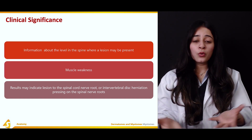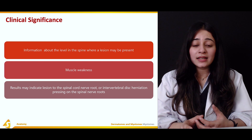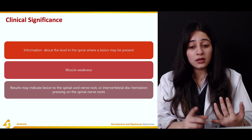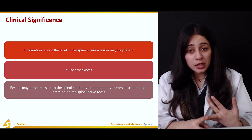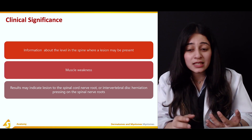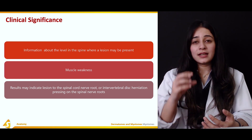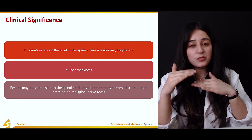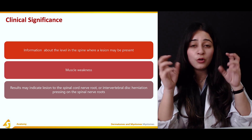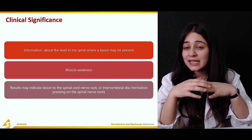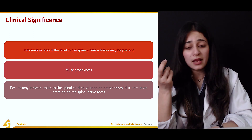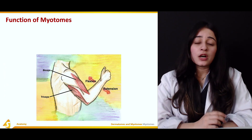When we ask the patient to perform these activities and the patient is unable to do so, that means a lesion is present or the muscle is weak. Results may indicate lesions to the spinal cord, nerve roots, or intervertebral disc herniation pressing on the spinal nerve roots — where the disc has protruded out, causing a painful condition with nerves being compressed.